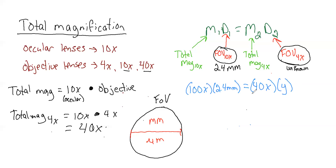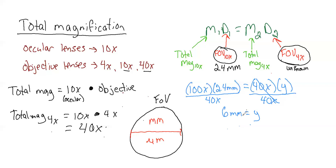To solve for y, we use basic algebra: if we are multiplying by something, we can get rid of it by dividing. So we divide both sides by 40x, which crosses out the 40x and leaves us with y. Then 100 times 2.4 divided by 40 equals 6. So the field of view at 4x is 6 millimeters.